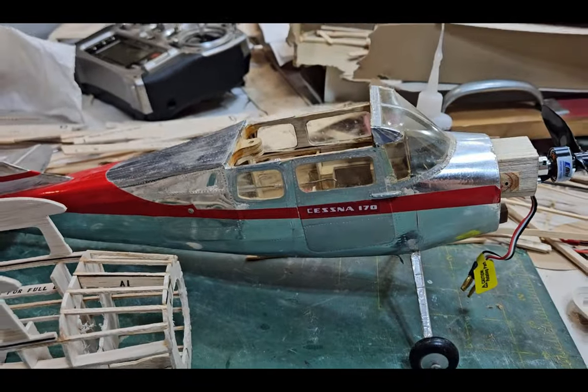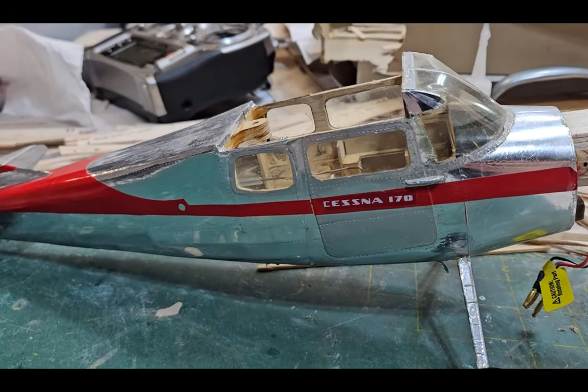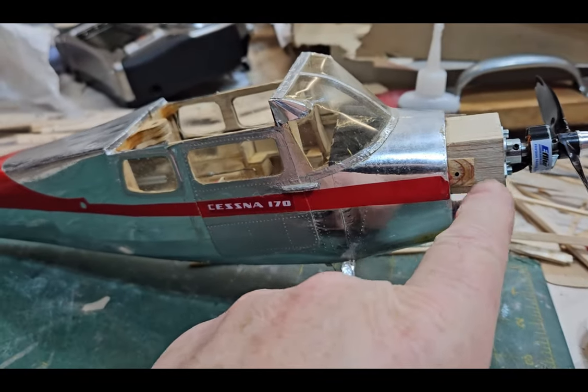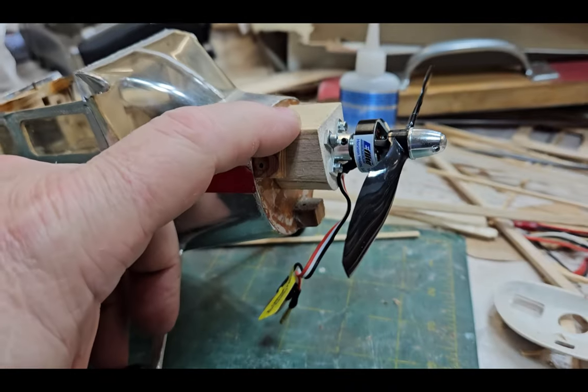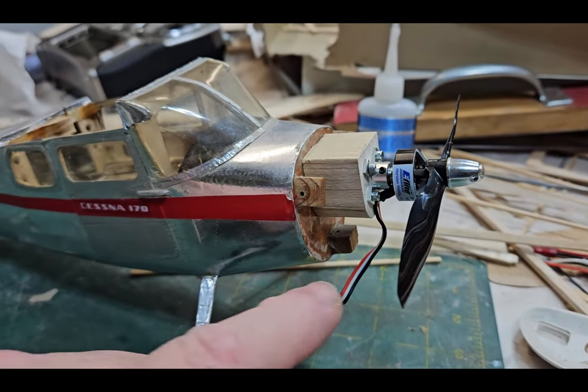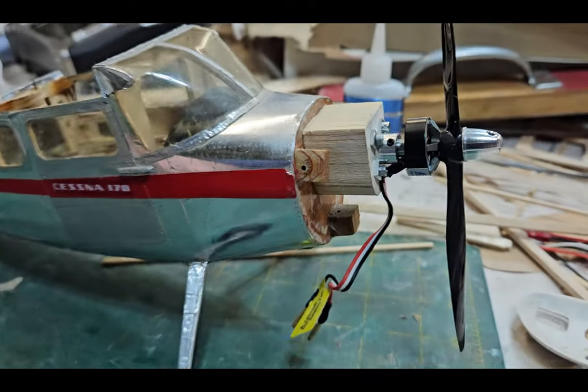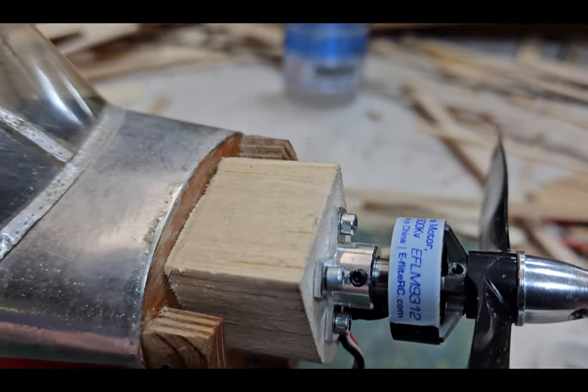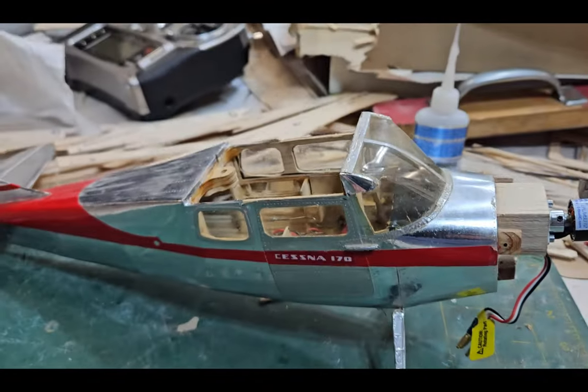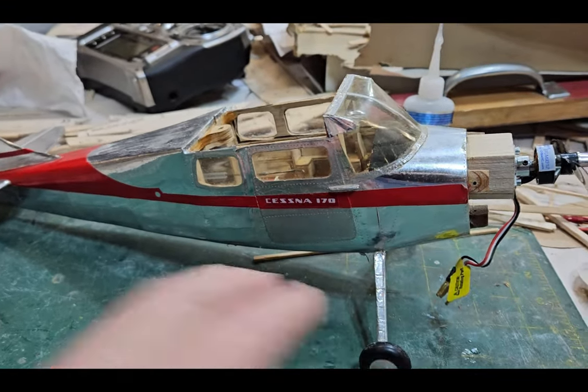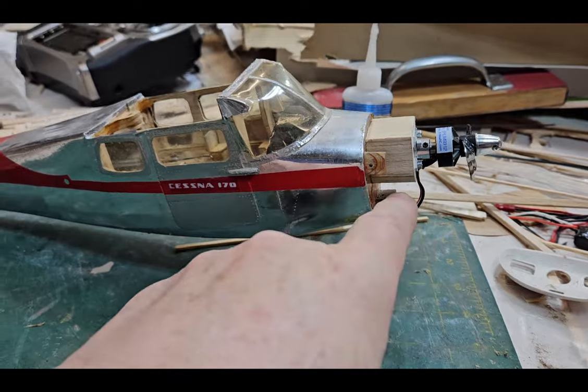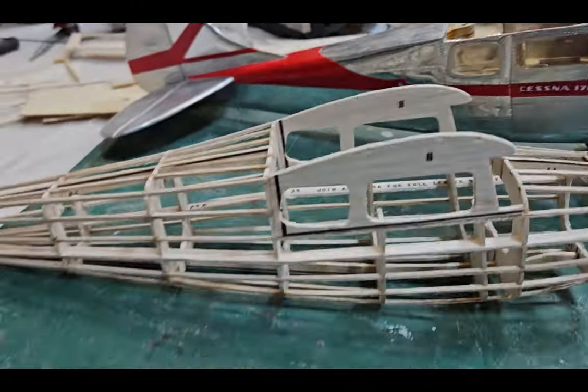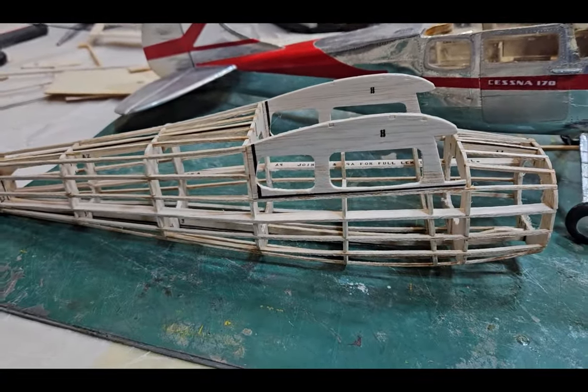This model here is a Gillos Cessna 170 that I had built probably 25 or 30 years ago. I just barely took off the little Cox Peewee 020 that was on here and mounted this E-Flight 2500 KV. Just barely mounted it on there so that I can get an idea of the weight and balance and where I'm going to put the battery. So far, the battery is going to have to go right up front. No big deal.